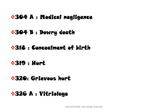Next comes 318, 319, and 320. IPC 318 is for concealment of birth. If they conceal the birth, that produces hurt. And that hurt can be converted into grievous hurt. So: 318 concealment of birth, 319 hurt, and 320 grievous hurt.